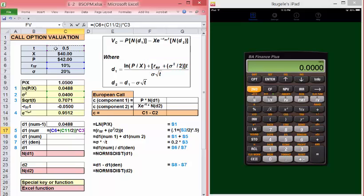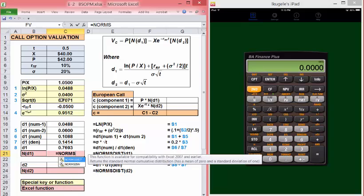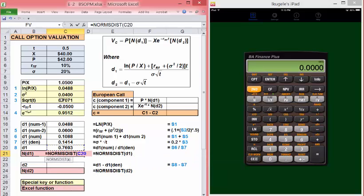Times the time. d1 numerator is the sum of those two values. d1 denominator is the standard deviation times square root of time. And d1 is just the numerator divided by the denominator. To get the normal distribution value, here's where we use NORMSDIST of that value.